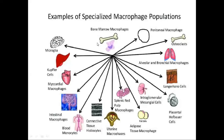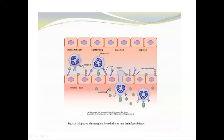Here are shown the different types of macrophages present in the body — within the bone marrow, macrophages; in the brain, microglia; in the liver, Kupffer cells; myocardial macrophages; and intestinal macrophages. This picture shows the migration of neutrophils from the blood into the inflamed tissues. Whenever there is damage to the tissues, there is release of inflammatory cytokines. These inflammatory cytokines increase the expression of selectins and intracellular adhesion molecules on the endothelial cell surface, which combine with receptors on the neutrophils and attract them towards the source of infection.